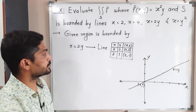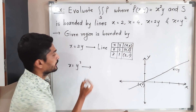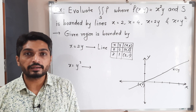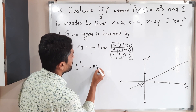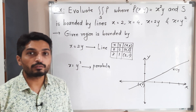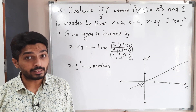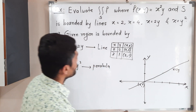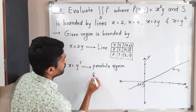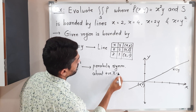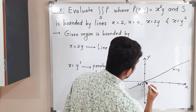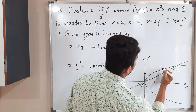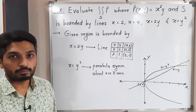Next, let us consider the curve x is equal to y². Power of x is 1 and power of y is 2, so one variable has power 1 and the other has power 2 — that means it is 100% a parabola. The power of x is 1, so the parabola is symmetric about the x-axis, and since x has a positive sign, it is symmetric about the positive x-axis. So I am drawing the rough sketch of the parabola and labeling it x is equal to y².